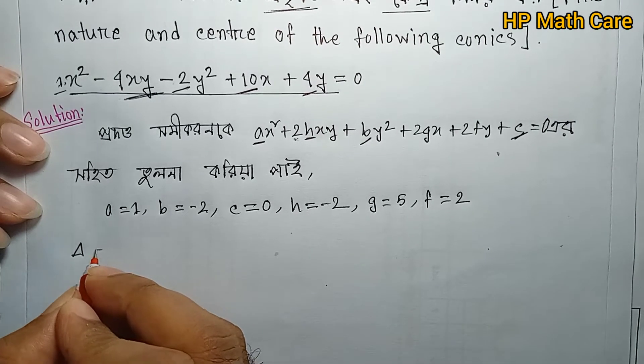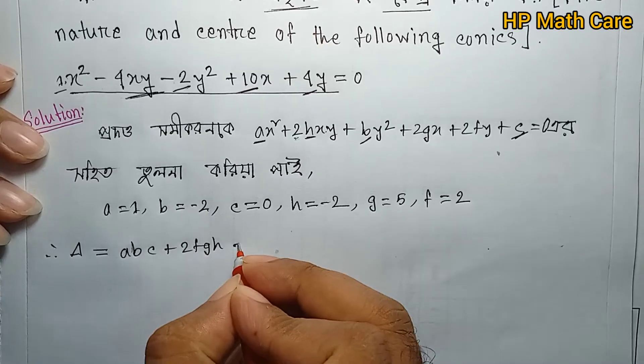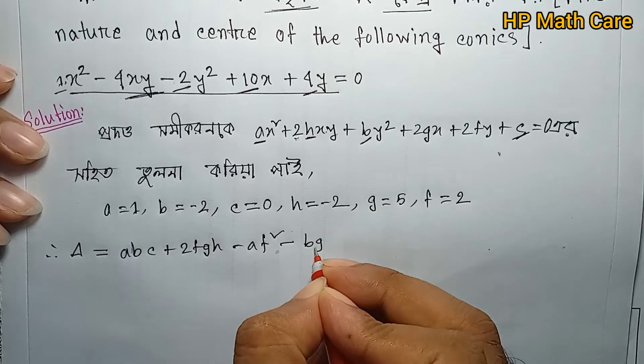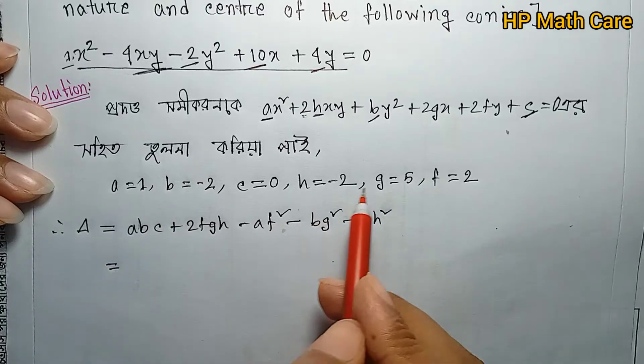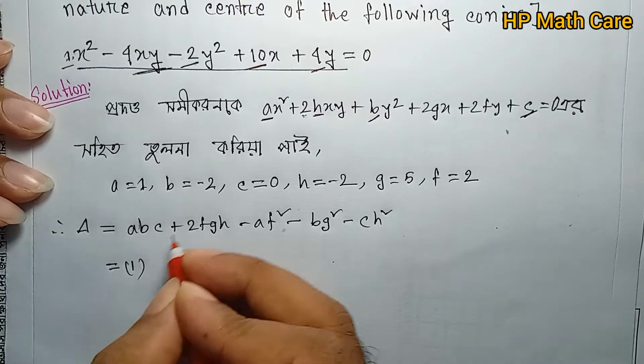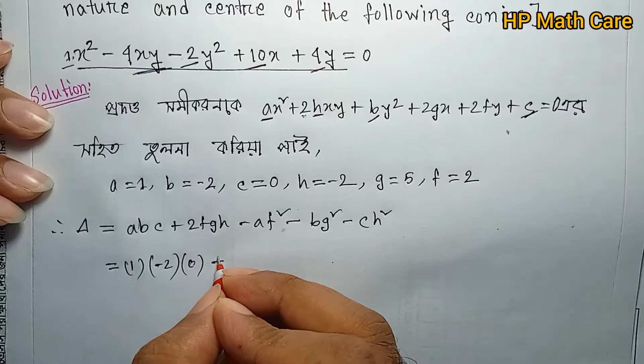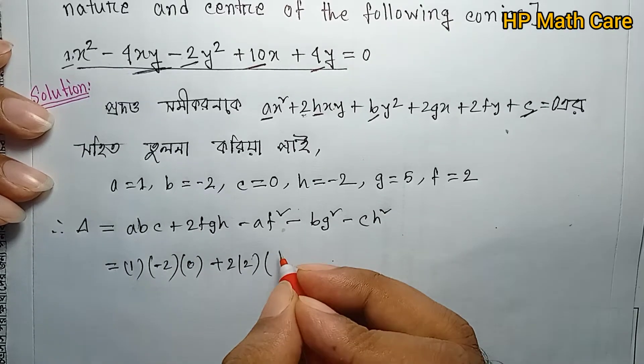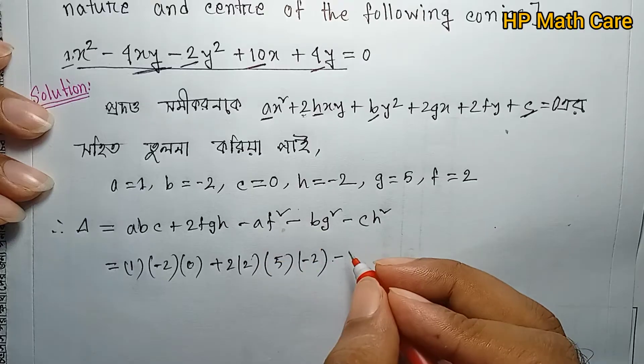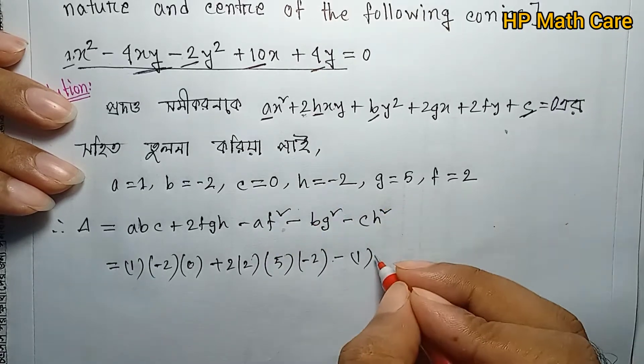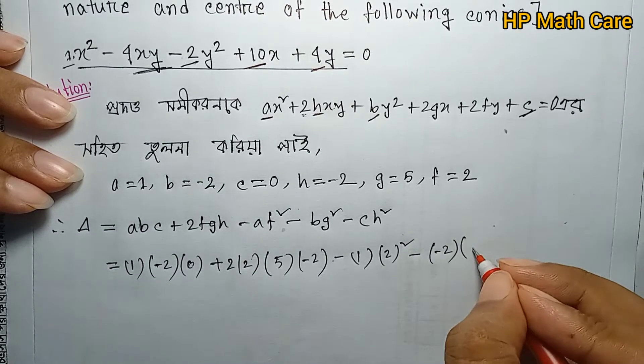Now we calculate delta (Δ). The delta formula is Δ = abc + 2fgh - af² - bg² - ch². Let me substitute the values: a=1, b=-2, c=0, h=-2, g=5, f=2.